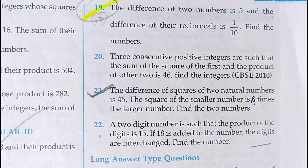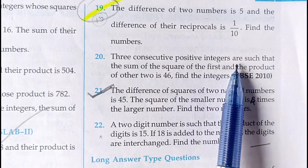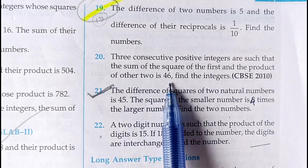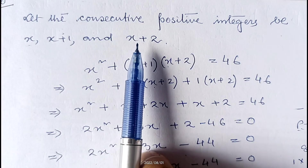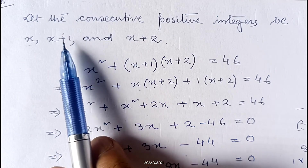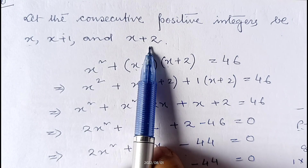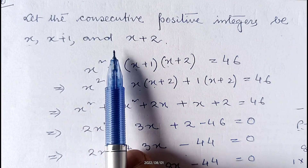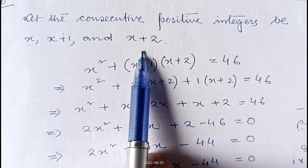Question 18 is same as question 13, and question 19 is of similar type, so I'm not showing these two. Let me show question number 20. Three consecutive positive integers are such that the sum of the square of the first and the product of the other two is 46. Find the integers. Let the consecutive positive integers be x, x+1, and x+2.